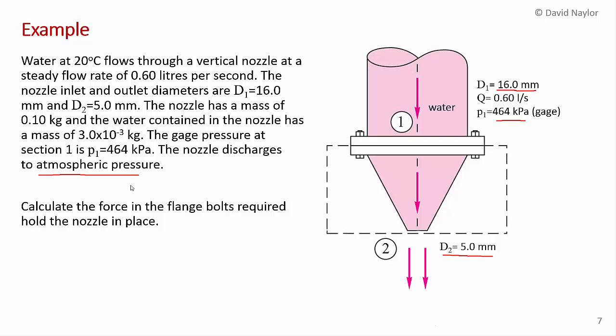Now, before we do this problem, I just want to talk about one common assumption that you can make. It's important that where a jet discharges to atmosphere here, you can assume that at section 2, the pressure is equal to the atmospheric pressure. So here we can set the pressure at P2 equal to zero gauge.